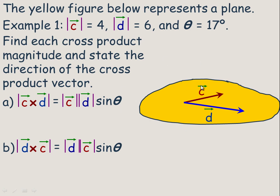This yellow figure here is meant to represent a plane, a flat surface that goes infinitely in all directions. We're told that the length of c is 4, the length of d is 6, and the angle between them is 17 degrees. We're asked to find each cross product magnitude and state the direction. So c cross d, we would go 4 times 6 times sine of 17 degrees, which is about 7.